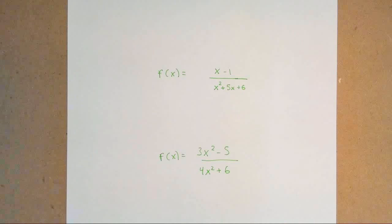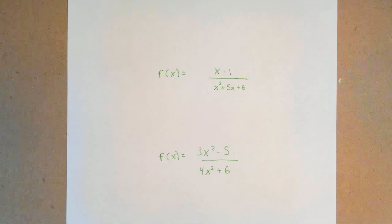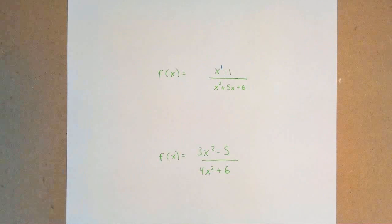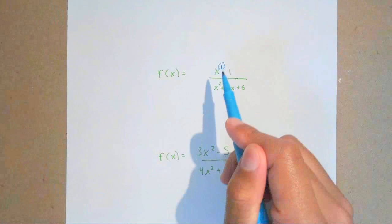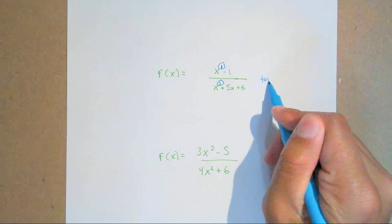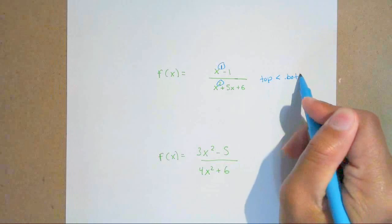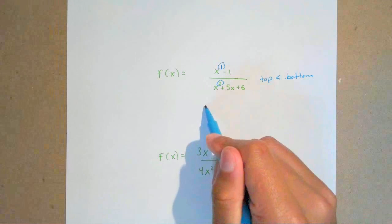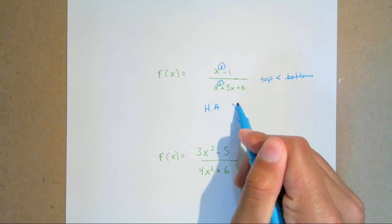For the next one: f of x equals x minus one over x squared plus five x plus six. My goal is to find the degree on top. There's no explicit exponent, but there is an invisible x to the first power, so the degree on top is one, and the degree on the bottom is two. My top is less than my bottom, so the horizontal asymptote is y equals zero.